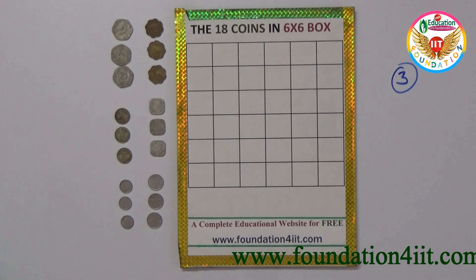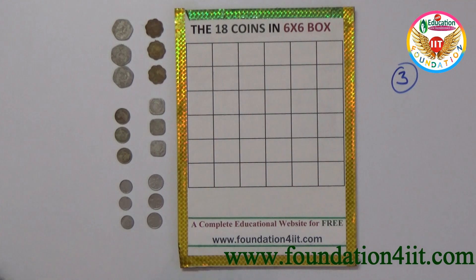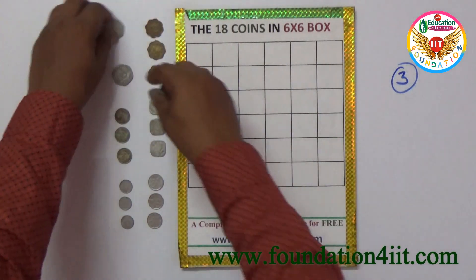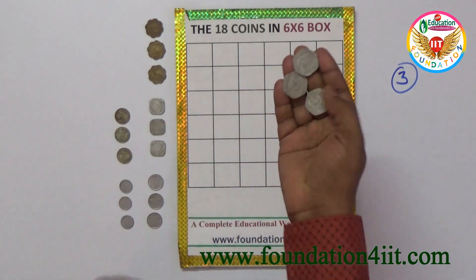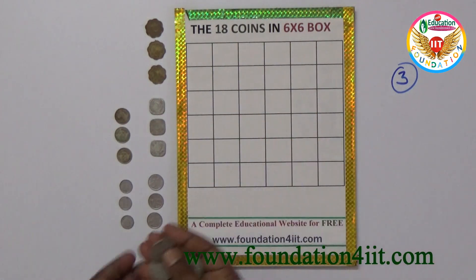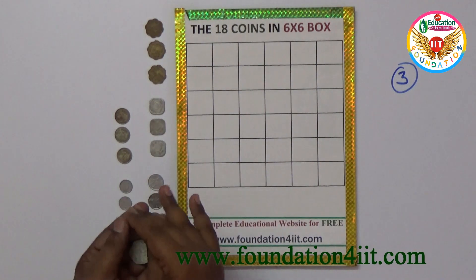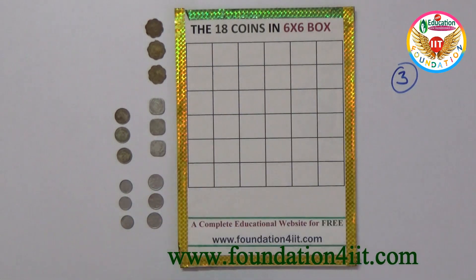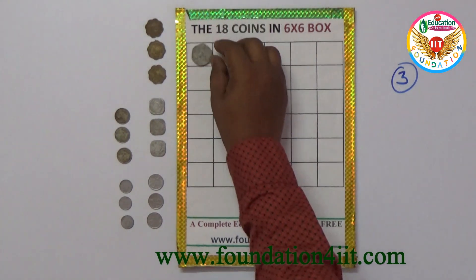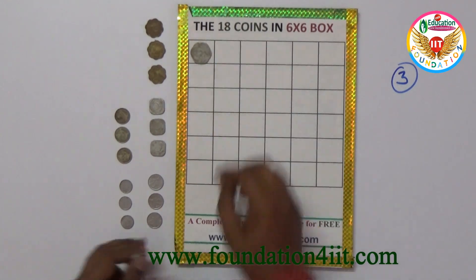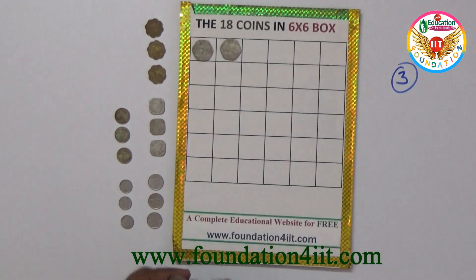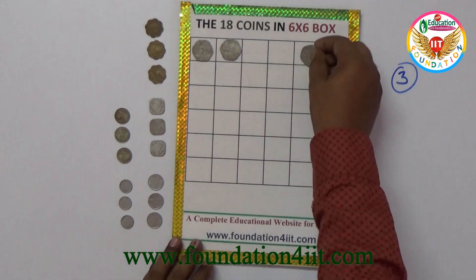I have taken 18 coins — these are old 20 paisa coins I had. You can use any 18 coins. I will show the solution directly. For example, I am placing coins — every row and every column should have only 3.